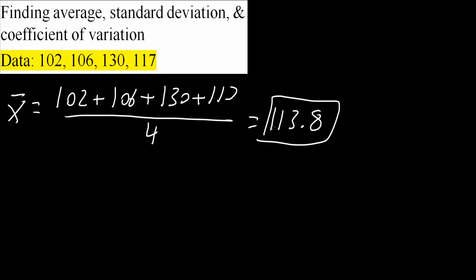Next, we will get the standard deviation. Standard deviation is equal to the square root of, so we take 102, the first number here, 102, minus average, 113.8. We take a parenthesis, we square it.